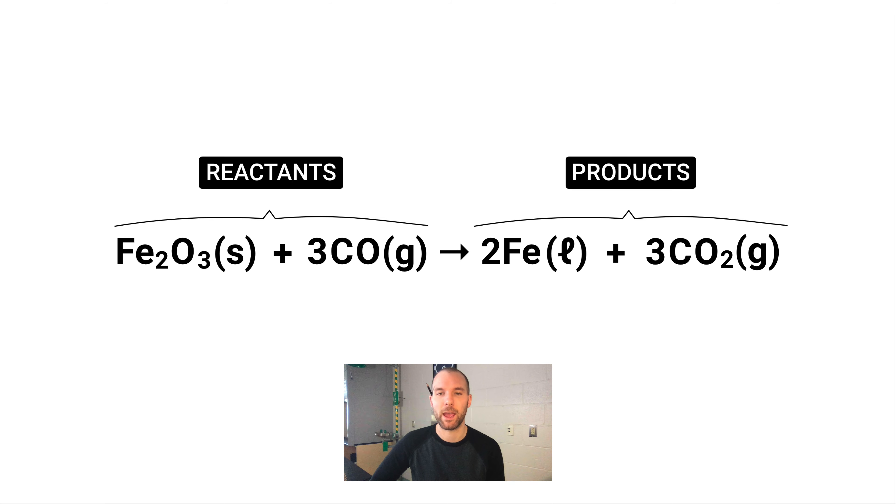The arrow represents the reaction taking place. Most arrows are just a left to right normal arrow, but there are actually a couple different types of arrows you could put in a chemical equation. We'll save that conversation for later down the road.